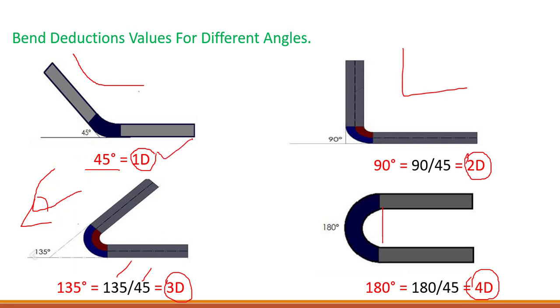So for 45 degrees, it is 1D. 45 divided by 45 equals 1. For 90, 90 divided by 45, that's 2D. And for 135 degrees, it is 3D, and for 180 degrees, it is 4D. Remember all of these values.